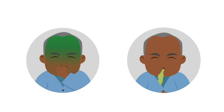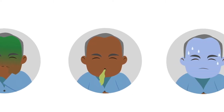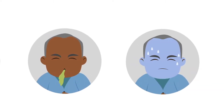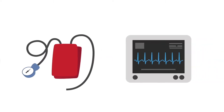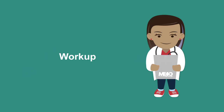Nausea and vomiting is present in about 90% of patients and can last for several hours. Patients with severe acute pancreatitis may have dyspnea, or shortness of breath, due to inflammation of the diaphragm. There can also be alterations in vital signs, particularly hypotension and even tachycardia.